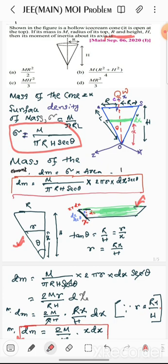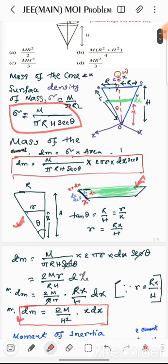And from the diagram, see this magnified picture, dL equals to dx sec theta. By putting this value we get dm equals to capital M by pi rh sec theta into 2 pi small r dx sec theta. By simplifying this we get 2m small r divided by capital R into capital H dx.